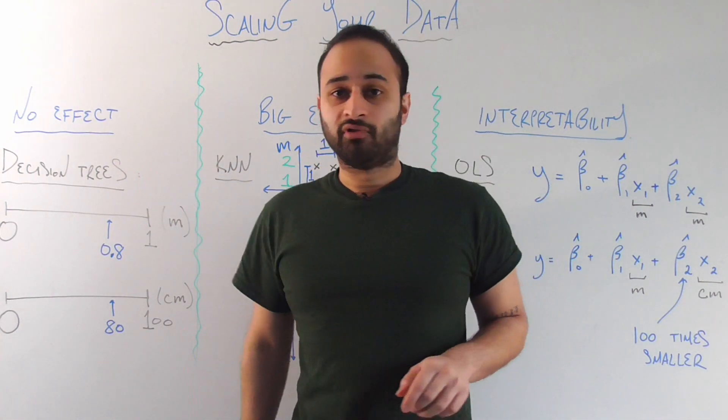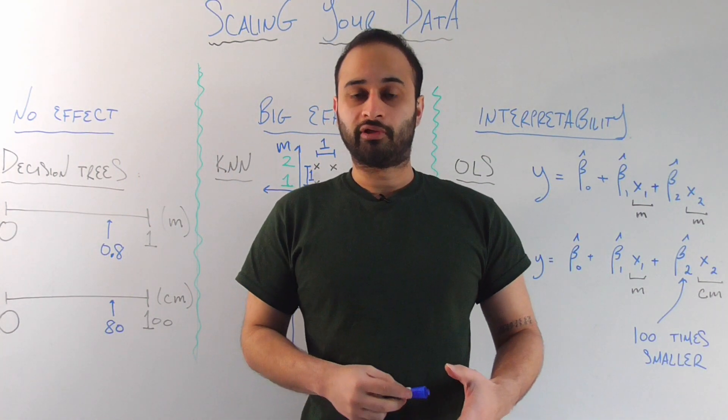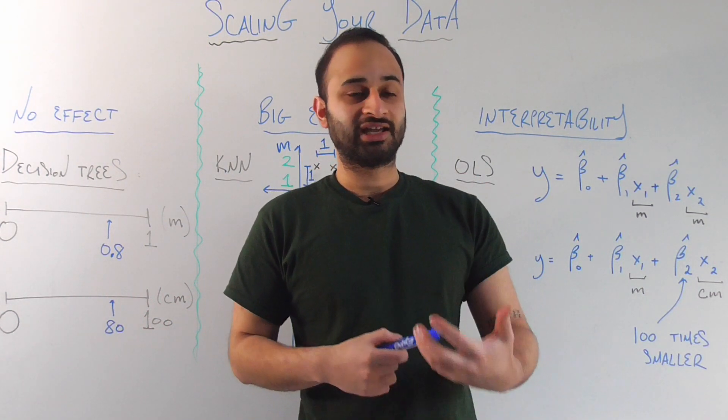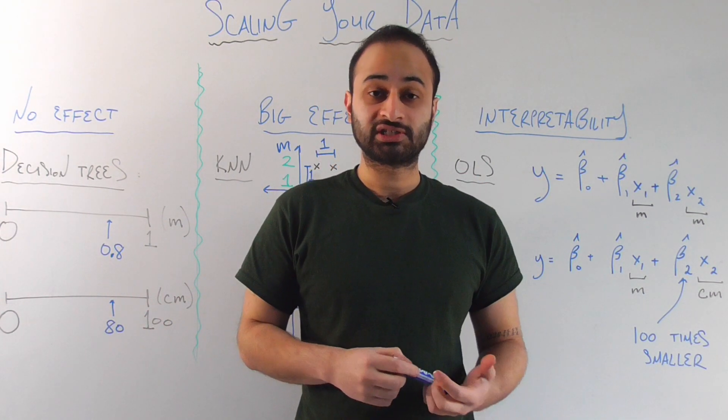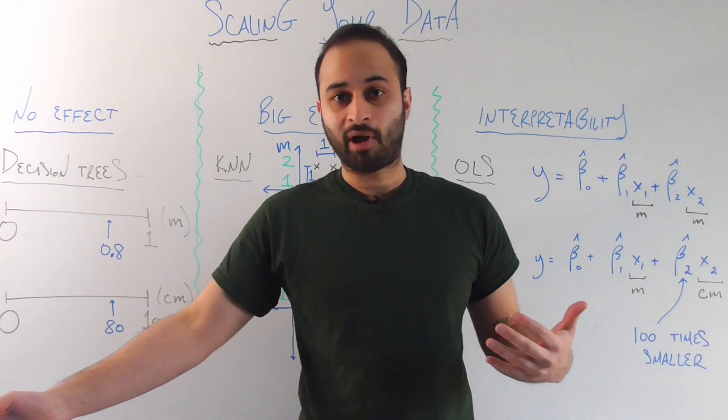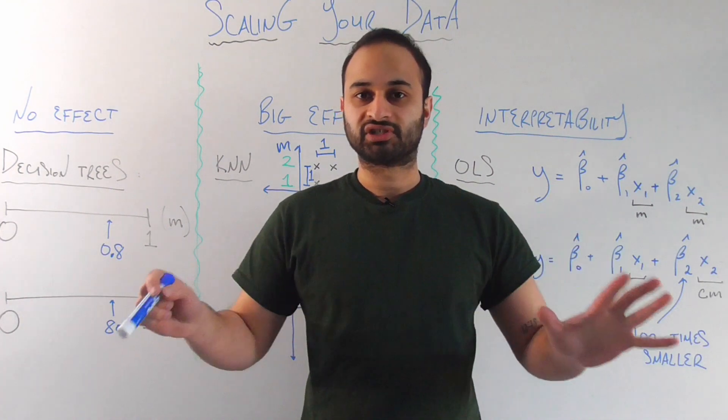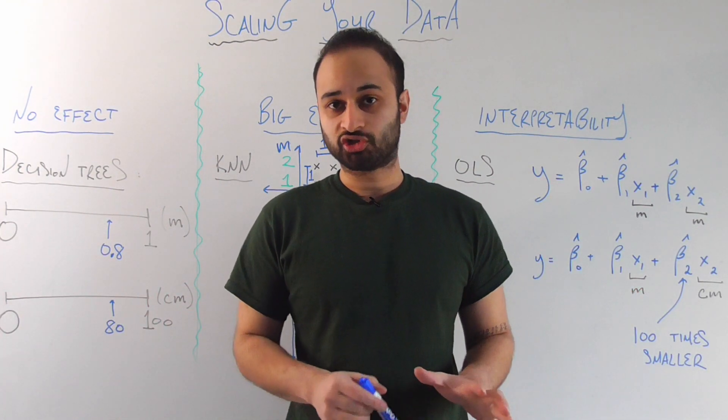So the first is where you have no effect on your machine learning algorithm, whether you choose to scale or do not scale your data. And I think the best example of this is decision trees and all the variants that come after. So random forests and bagging and boosting and extra trees, all this stuff.